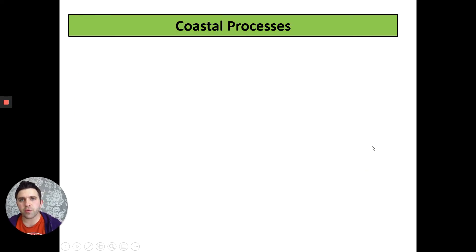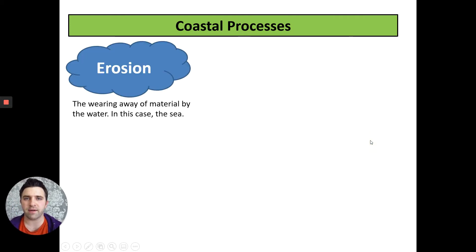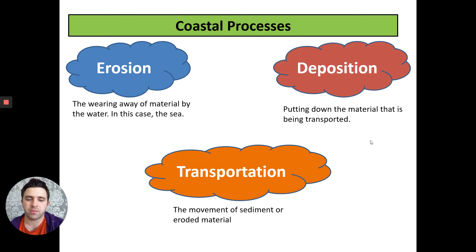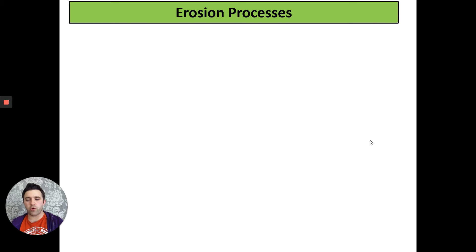We've got three main coastal processes. The first one is erosion, where material is worn away by the water, in this case by the sea and the waves. We have transport, the movement of sediment or eroded material, and deposition. Those are our three main types of processes. We're also going to look at weathering and the different sub-processes that make this up. Let's start with erosion though.